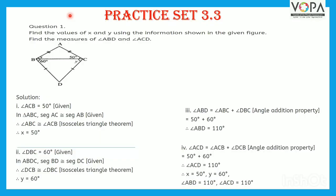Practice Set 3.3, Question 1: Find the values of X and Y using the information shown in the given figure. Find the measures of angle ABD and angle ACD. Solution: Angle ACB is equal to 50 degrees, as given.